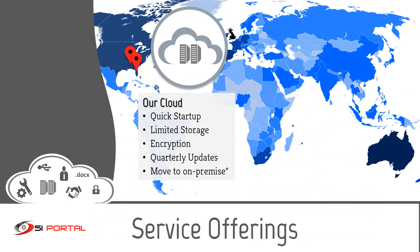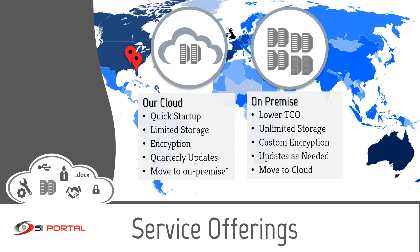We have two service offerings — two flavors of our cloud solution and an on-premise solution. Our cloud service allows for a quick startup, as we have a good portion of the setup automated for you. We do limit the storage to 2GB per user, hence 10GB for 5 users. All your passwords and documents are encrypted with your encryption key, while active and at rest. We typically release updates every quarter. The first cloud option is a secure, multi-tenant environment, similar to many PSAs. The second is a dedicated environment, which allows you to move to on-premise if needed. We also allow you to run the portal on-premise, giving you complete control — your storage runs the portal, so there are no storage limitations. You use your own encryption keys, and we do not have access to any of your data. Updates are provided as needed, and you can always move to our cloud.